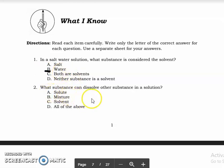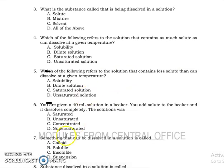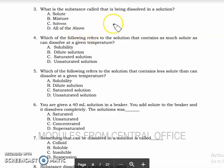Next, number 2. What substance can dissolve other substance in a solution? Again, it's solvent. Then let's proceed to the next question, number 3. What is the substance called that is being dissolved in a solution? The answer is letter A, solute.